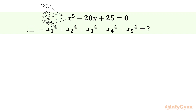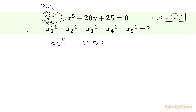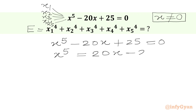Now from our equation we can check easily x cannot be 0. Once we put x equal to 0, LHS will be 25 and RHS is 0. So for our equation x cannot be 0. Now we will write our equation x power 5 minus 20x plus 25 equal to 0, or we can write x power 5 equal to 20x minus 25.